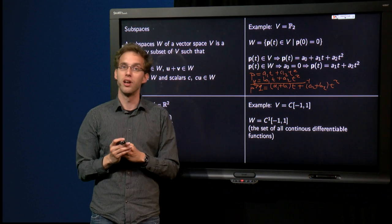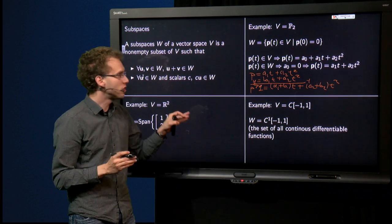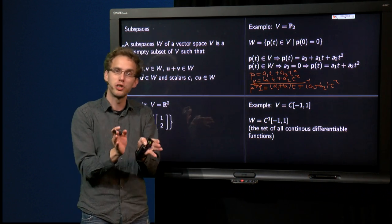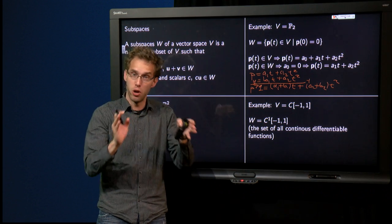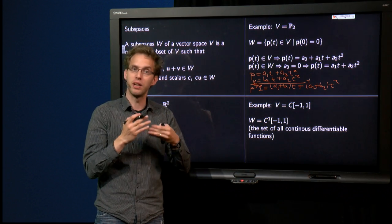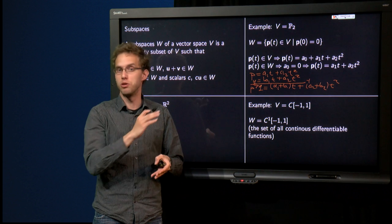So that is our last example. So you see, checking whether some set is a vector space is a lot of work, but checking whether it is a subspace goes much faster.